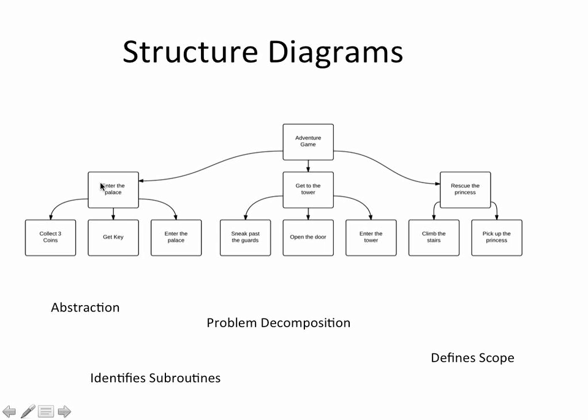You'll note that before we complete the task at a higher level in the diagram, we must first complete all the tasks below it. So the first task within this adventure game would be to collect three coins, then get a key, then enter the palace. And then once we've done that, we can say that we've completed the task of entering the palace.